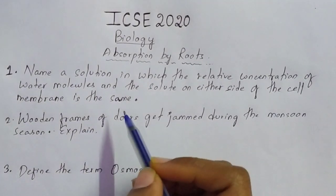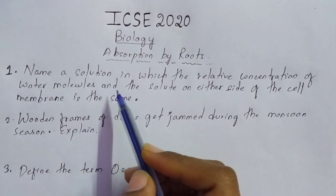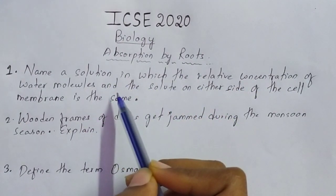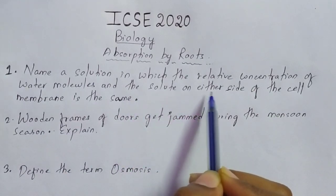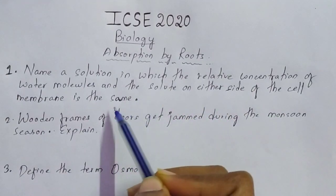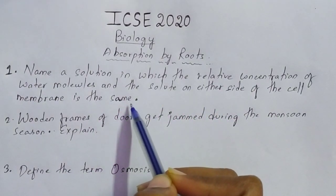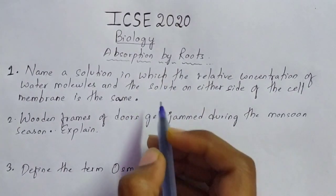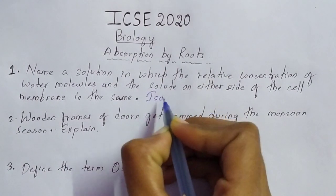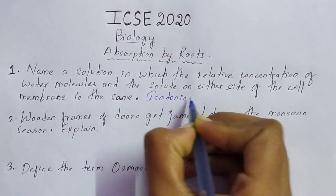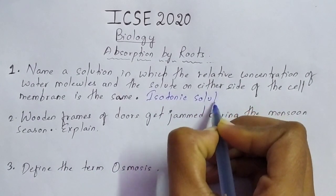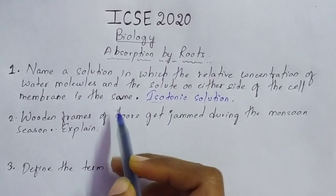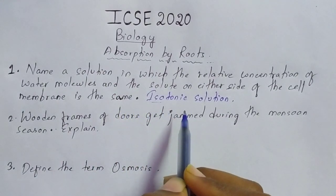The first question is a 'name the following' type of question. Name a solution in which the relative concentration of water molecules and the solute on either side of the cell membrane is the same. The answer is isotonic solution. Iso means same, so the answer is isotonic solution.